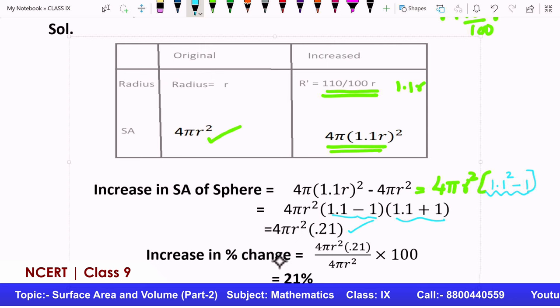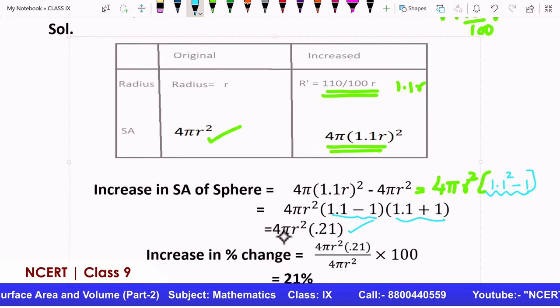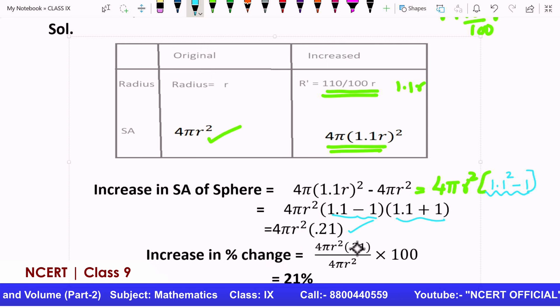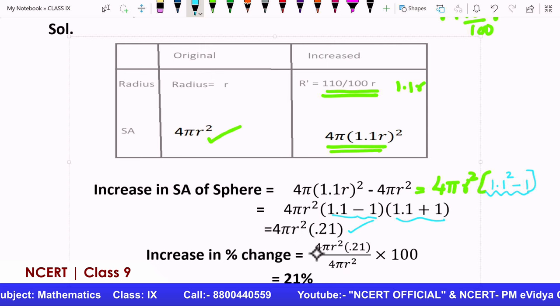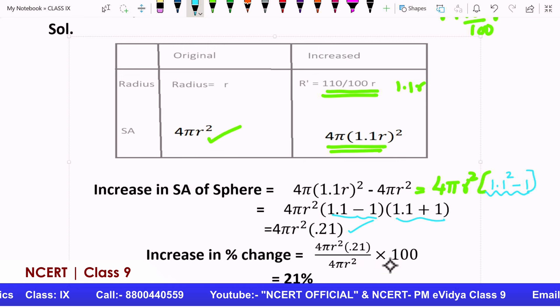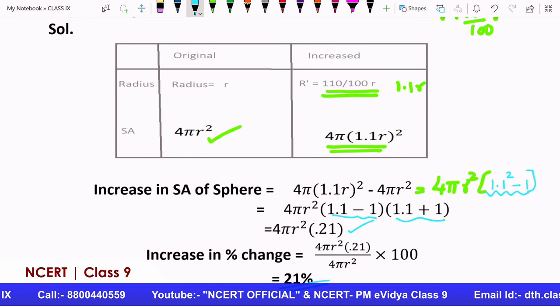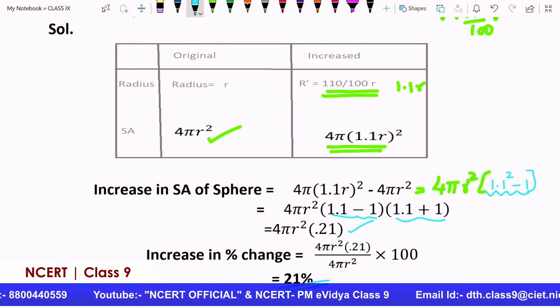Now, the question is about increase in change. We need to see. We don't need the exact value. So we do not require this r here. We are comparing this increase/change with the original area. So the new one is 0.21 times original. So the percentage change will be 21 percent. Right. So that's another question we have.